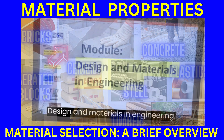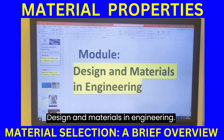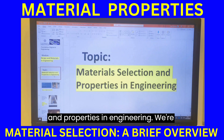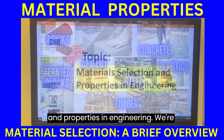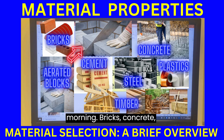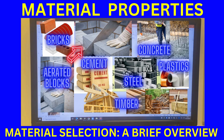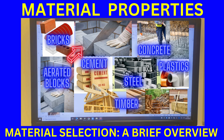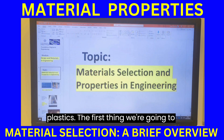Design and Materials in Engineering. Inside this module, we're going to be looking at materials selection and properties in engineering. We're going to be looking at seven materials: bricks, concrete, aerated concrete blocks, cement, metals, timber, and plastics.